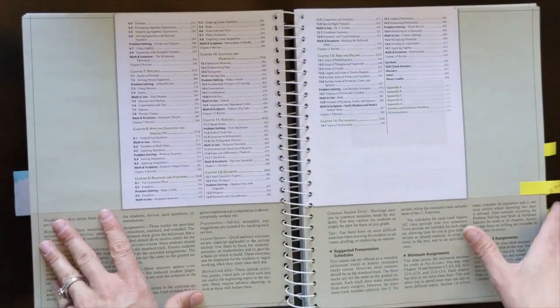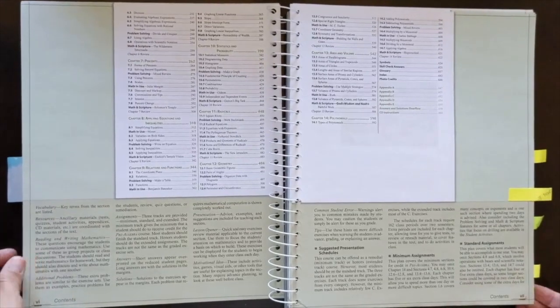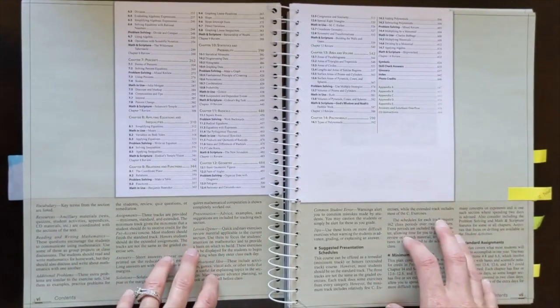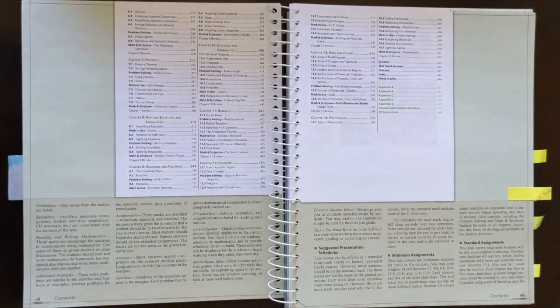This is actually one of my favorite parts about this curriculum: there are more than one track. If your child needs a little bit of remedial work, if your child is pretty average and needs just a standard amount of math work, or if your child is more advanced and would maybe be in an honors class in school, there's actually assignments that are going to be tailored for each of those scenarios. You're the parent, you can always modify those, but there are suggested schedules.